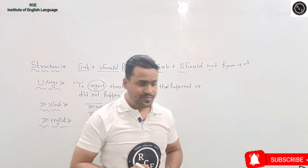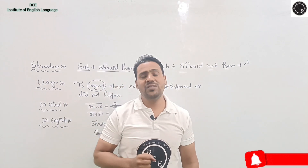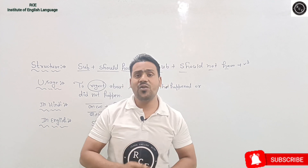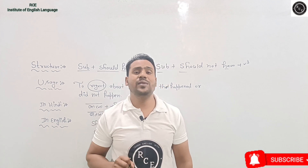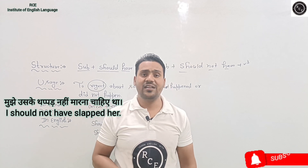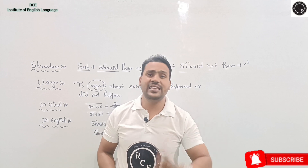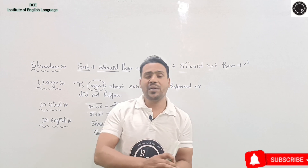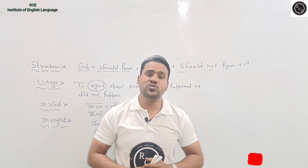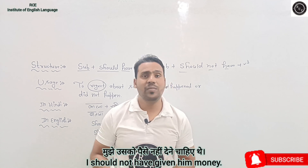For example, if I slapped someone and now I regret it, I will say: mujhe uske thapad nahi maarna chahiye tha — I should not have slapped her. Another example: if you gave someone money and they are not returning it, you say: mujhe usko paise nahi dene chahiye the — I should not have given him money.